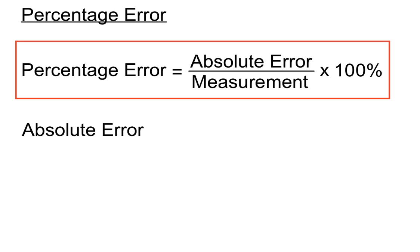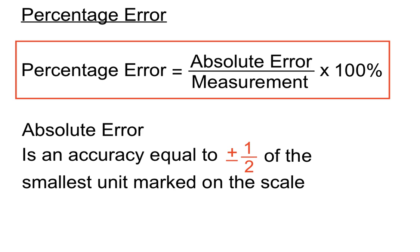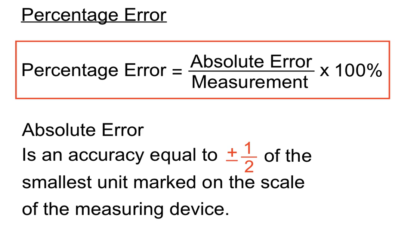The absolute error that goes on the top of our fraction is an accuracy equal to plus or minus half of the smallest unit marked on the scale that we're measuring. So we use a measuring device to measure things, and we figure out what the smallest unit marked on the measuring scale is.